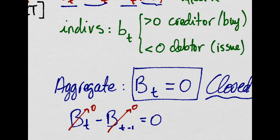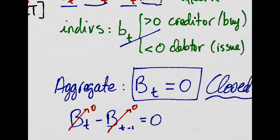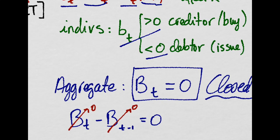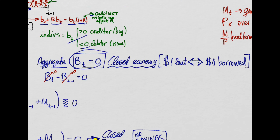But if we add all the positions of borrowers and lenders, we will find out that on aggregate, the stock of bonds is equal to zero. That is because in a closed economy, one dollar lent is equivalent to one dollar borrowed.